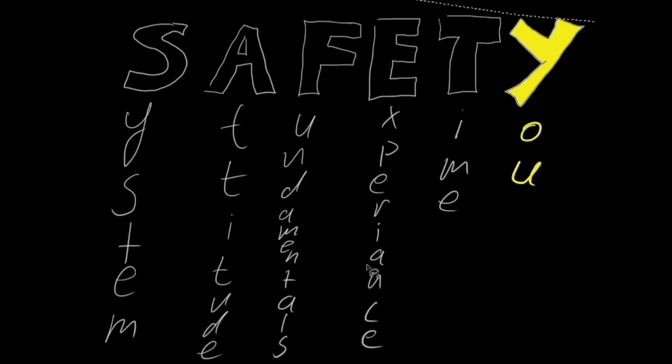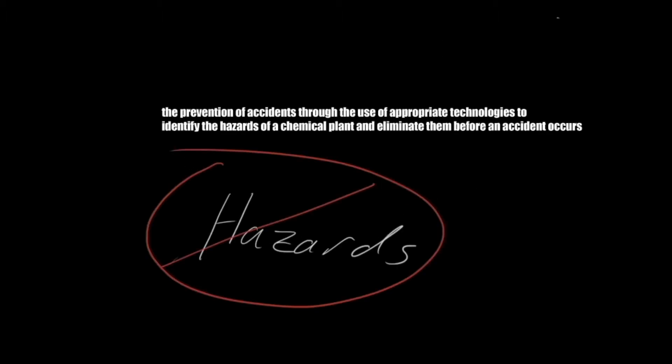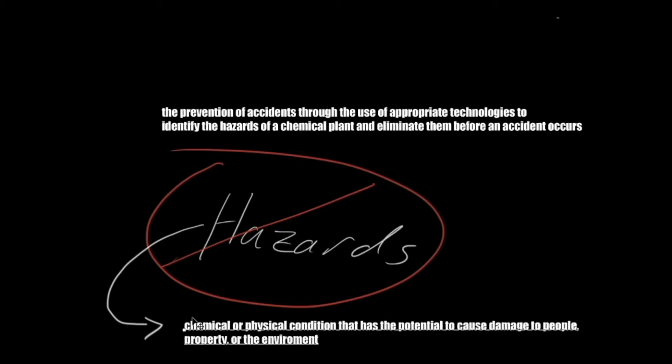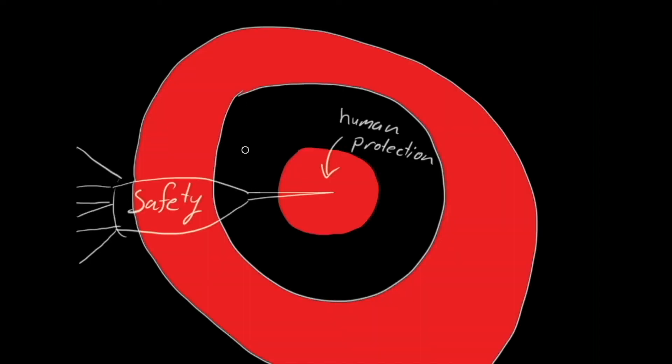Crowell and LeVar define safety as a prevention of accidents through the use of appropriate technologies to identify the hazards of a chemical plant and eliminate them before an accident occurs. Basically, safety is a management and mitigation of hazards — a chemical or physical condition that has the potential to cause damage to people, property, or the environment. So, although safety is primarily centered on human protection, it also encompasses the protection of assets and the environment.